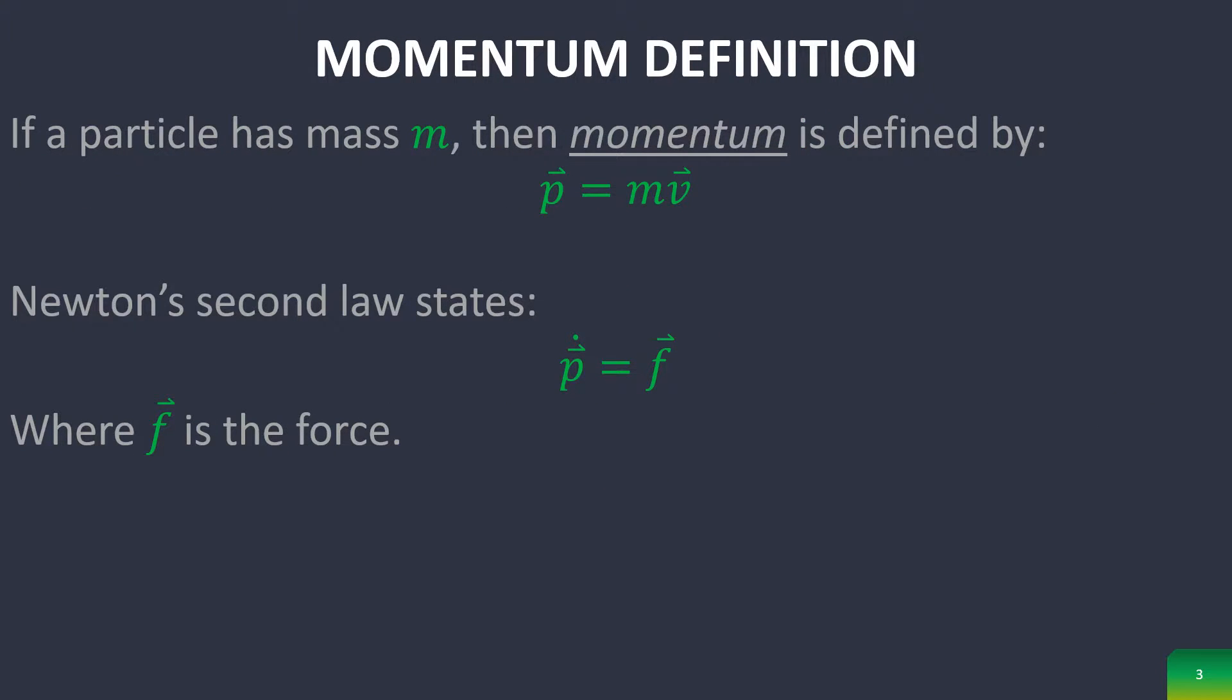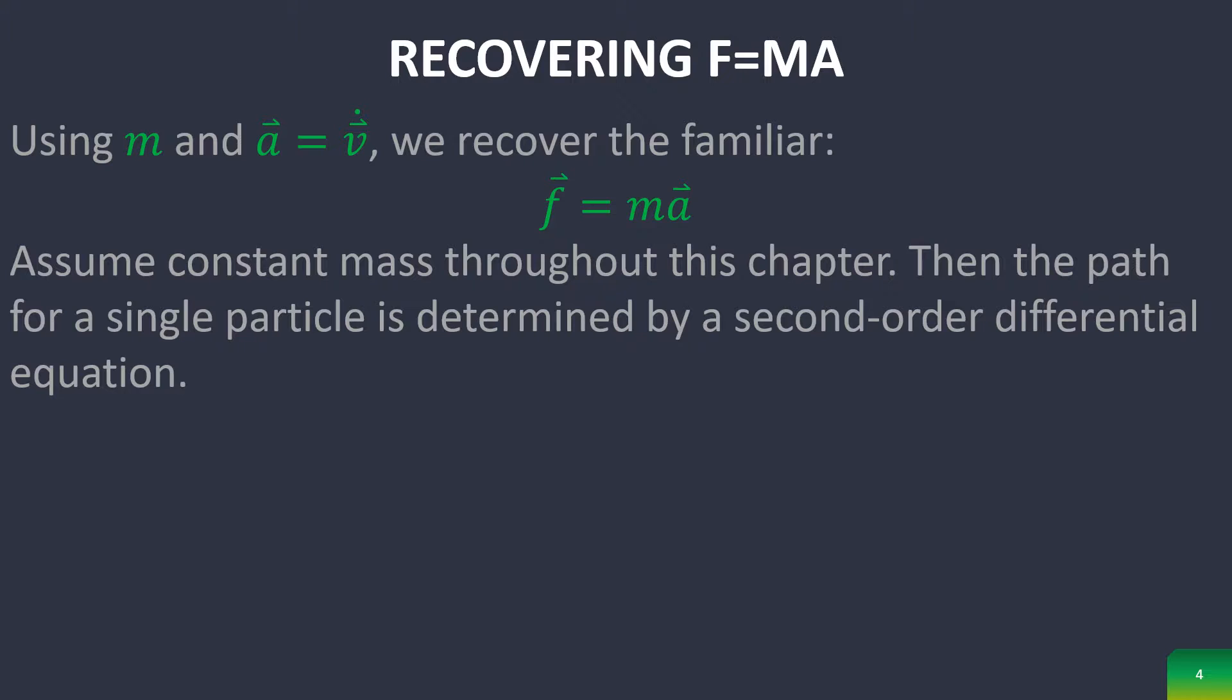This leads us to momentum, where if a particle has mass m, then momentum is defined as that mass times that particle's velocity. Newton's second law states that the time derivative of momentum is force, and when we take the time derivative of velocity, we get acceleration and recover the familiar F equals ma.